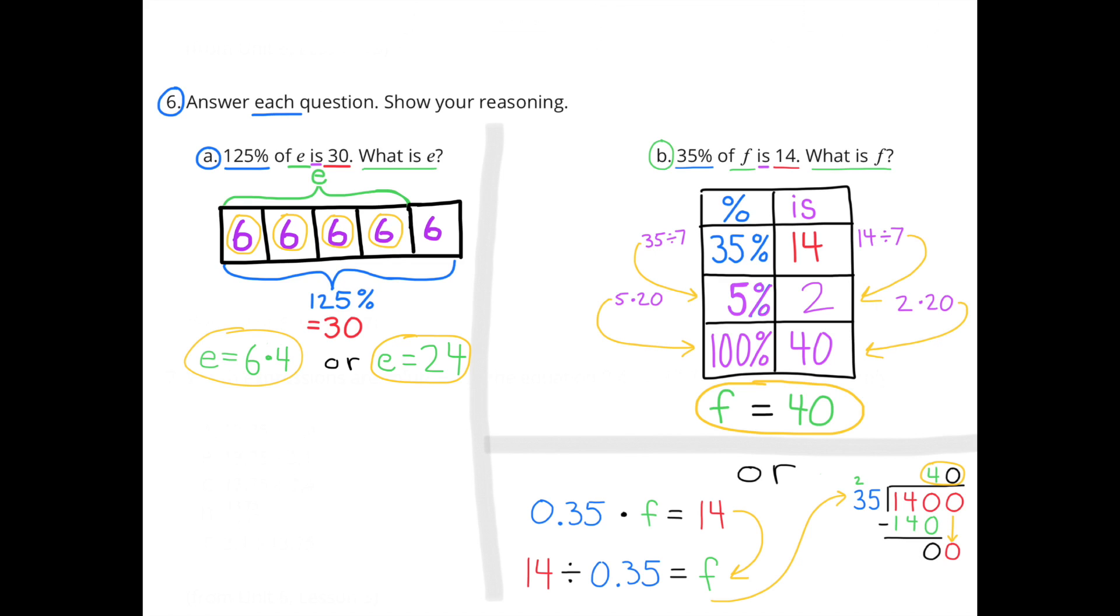Each box is worth 25%, and 25% is 6. Now we can add up 100% of the boxes and find the value for E. 100% of the boxes would be 4 of the boxes. 4 times 6 is 24. 125% of the boxes would be 30, but 100% of the boxes is 24.